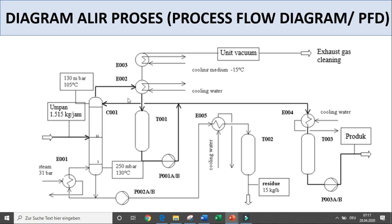Contohnya misalkan ini diagram sebuah proses. Ini adalah heat exchanger E001 — informasi tentang sistem, berapa bar, kemudian ada unit vacuum. Kemudian ini informasi tentang pompa P001A-B: artinya ini sebenarnya ada pompa A dan pompa B. Pompa A itu operating, sementara pompa B adalah pompa standby yang digunakan ketika pompa A mengalami gangguan.